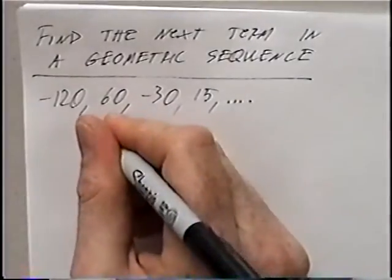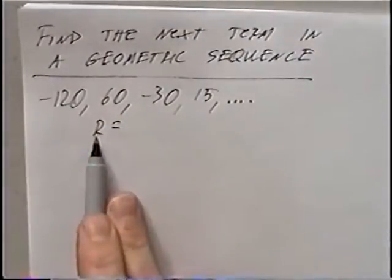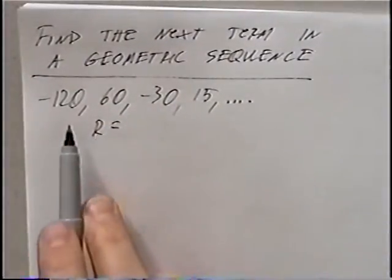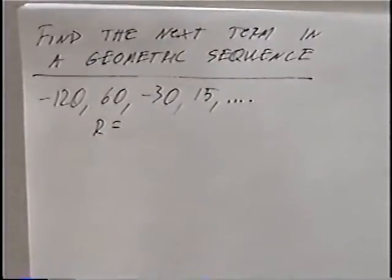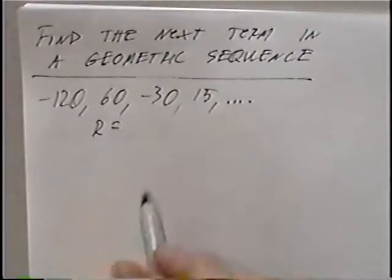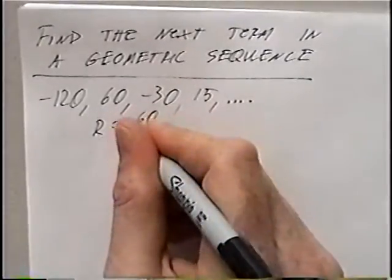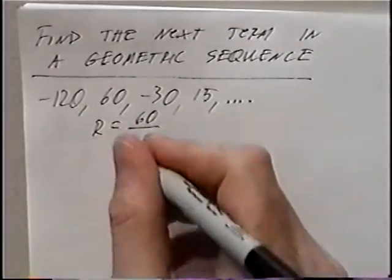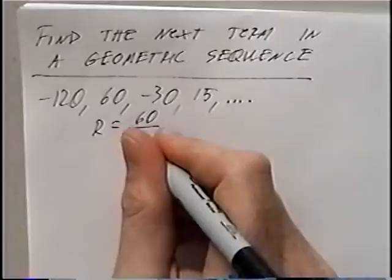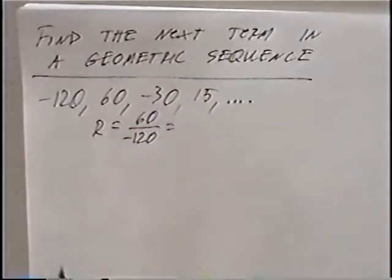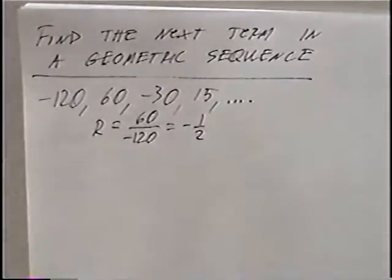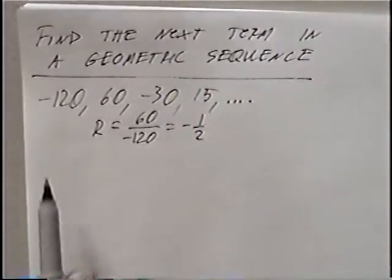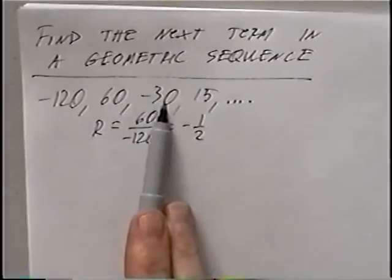For a geometric sequence, we want to find what r is. R is the rate — the number we're multiplying by each time to get the new number. To find r, take the second number, which is 60, and divide by the first number, which is negative 120. That gives r equals negative one-half, so each number is being multiplied by negative one-half.